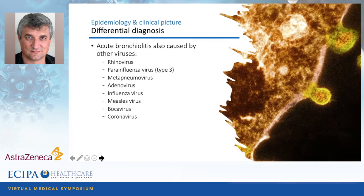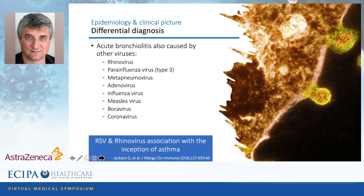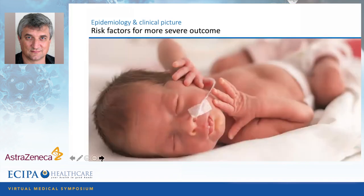It's not only RSV virus that causes bronchiolitis — other viruses are also implicated: rhinovirus, parainfluenza virus, human metapneumovirus, adenovirus, and influenza virus. Influenza virus often comes with very high fevers, different from RSV. Adenovirus may also come with high fevers and often conjunctivitis — keys that you're not dealing with RSV. Remember, we don't only have SARS-CoV-2 circulating — there are four other coronaviruses in our pediatric population. Importantly, rhinovirus causing wheezing is associated with the inception of asthma, so it's not only RSV but also rhinovirus linked to later asthma.